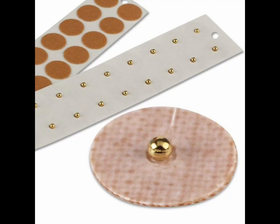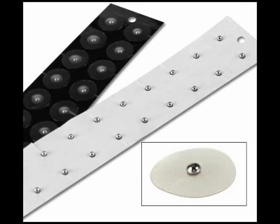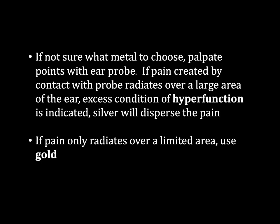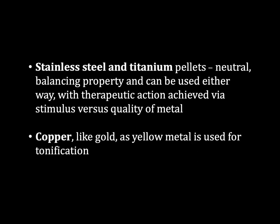This is an example of gold pellets, and these are silver pellets. If you are not sure what metal to choose, palpate the points with the ear probe. If the pain created by contact with the probe radiates over a large area of the ear, an excess condition of hyperfunction is indicated — silver will disperse the pain. If pain only radiates over a limited area, use gold. Stainless steel and titanium pellets have a neutral balancing property and can be used either way, with therapeutic action achieved by the stimulus versus the quality of the metal. Copper, like gold as a yellow metal, is used for tonification.